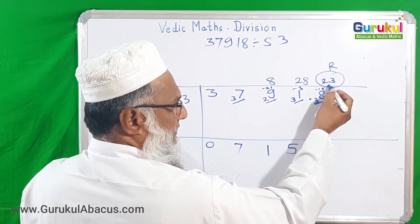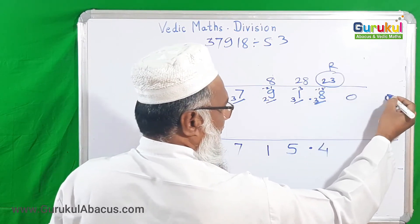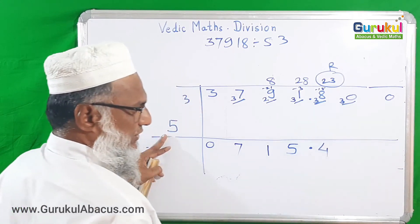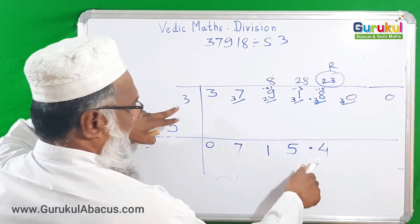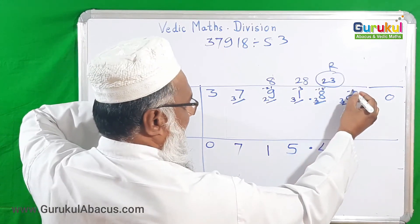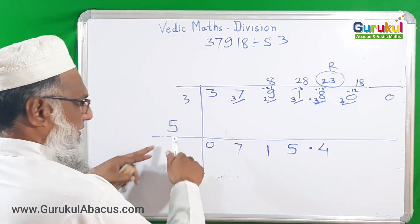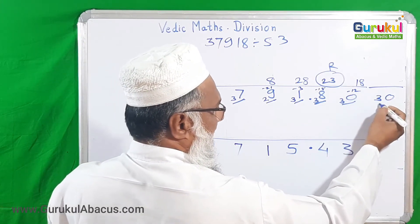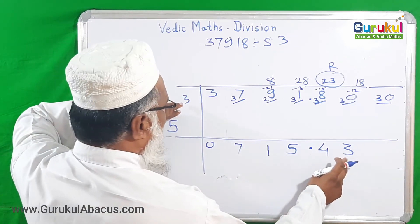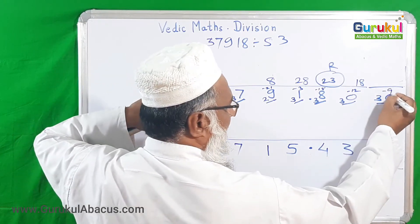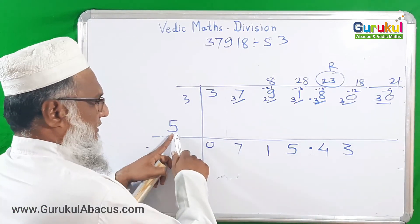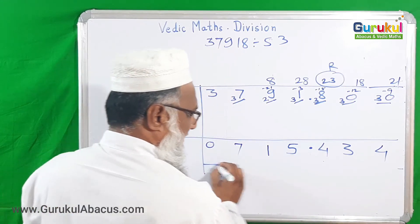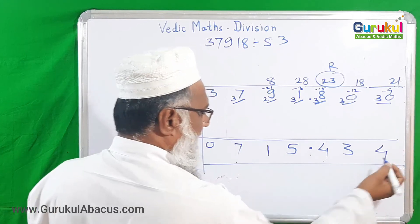After the decimal point: 23 is there. 5 fours are 20, subtracting gives remainder 3, giving 30. From 30 subtract the product of 4 and 3: 4 times 3 is 12, giving 18. 5 threes are 15; subtracting gives 3, so we have 30 again. From 30 subtract 3 times 3 equals 9, giving 21. 5 fours are 20. We stop here — the answer is 715.434.